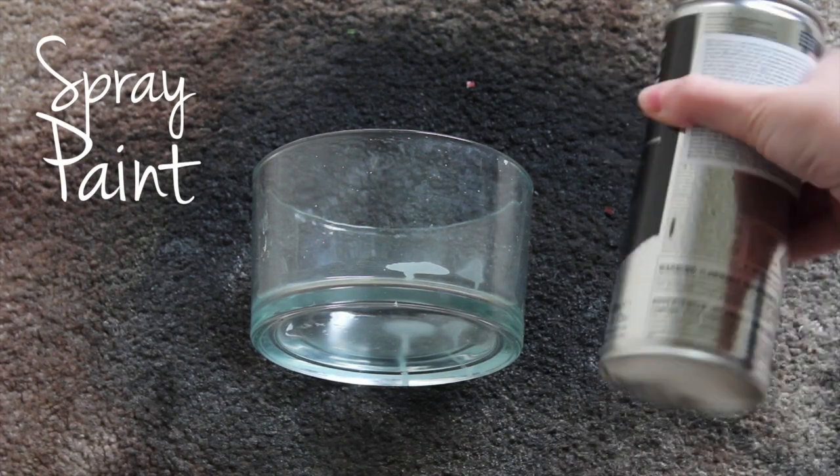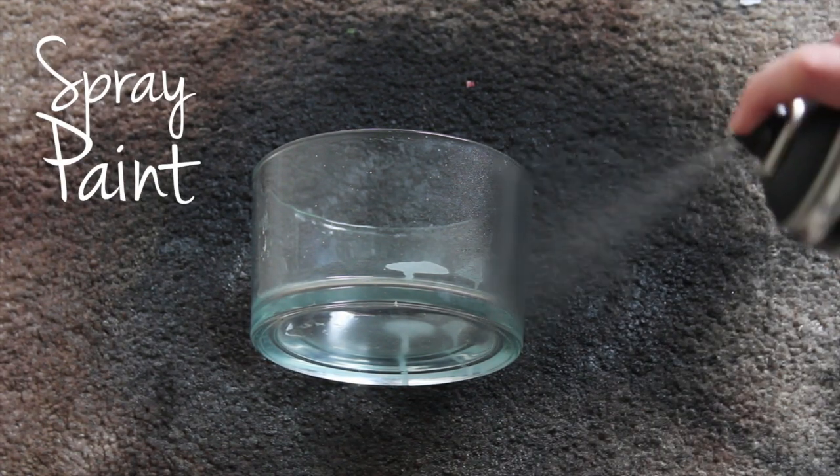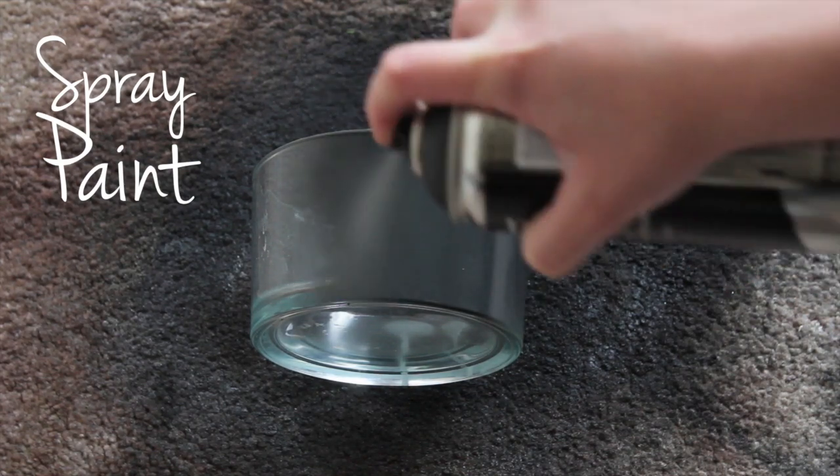The first thing you want to do is spray paint whatever jar you have on hand. You're going to spray paint it black. You can use other colors, but I prefer black because the contrast with the gold is a lot prettier.